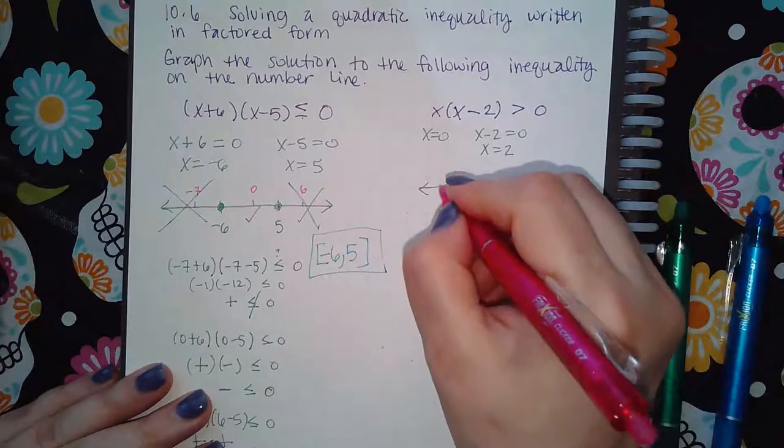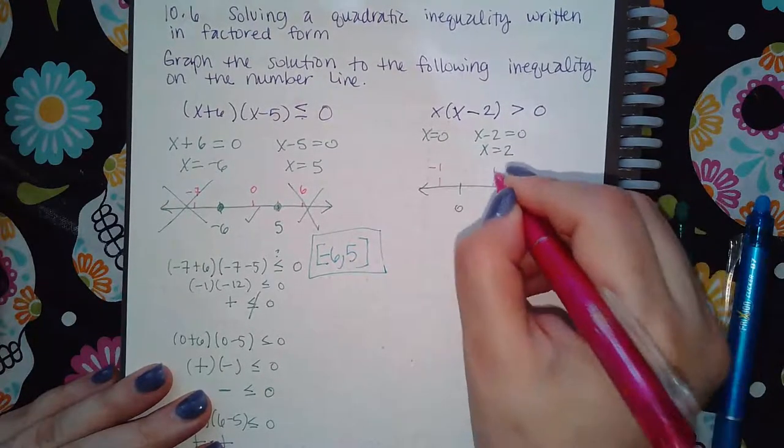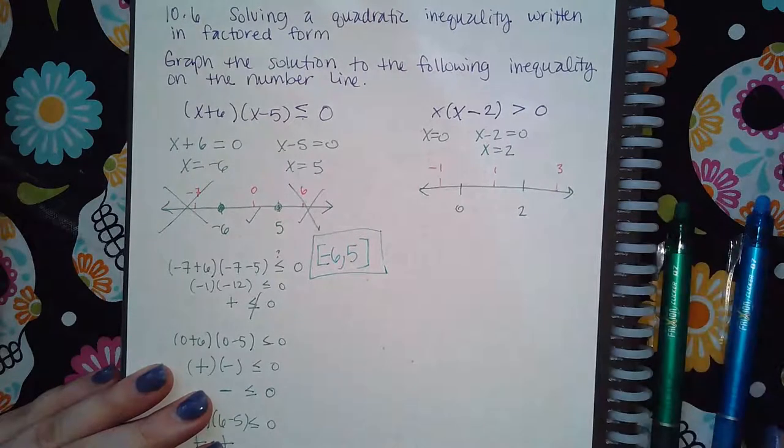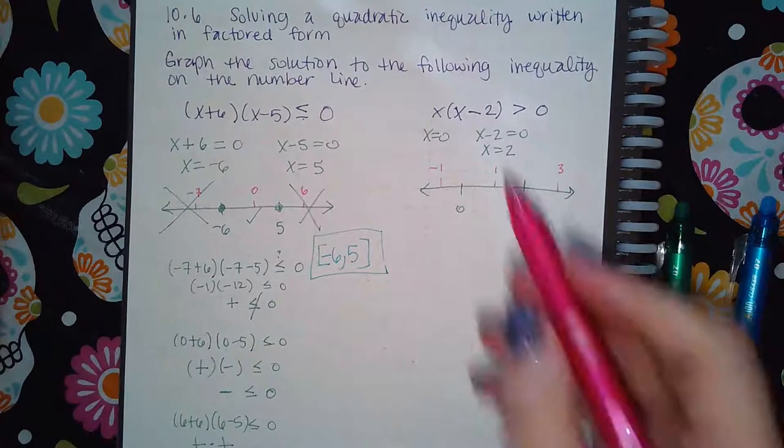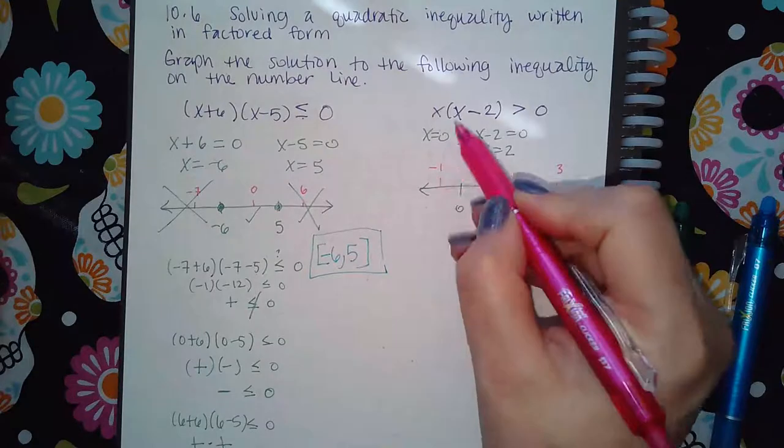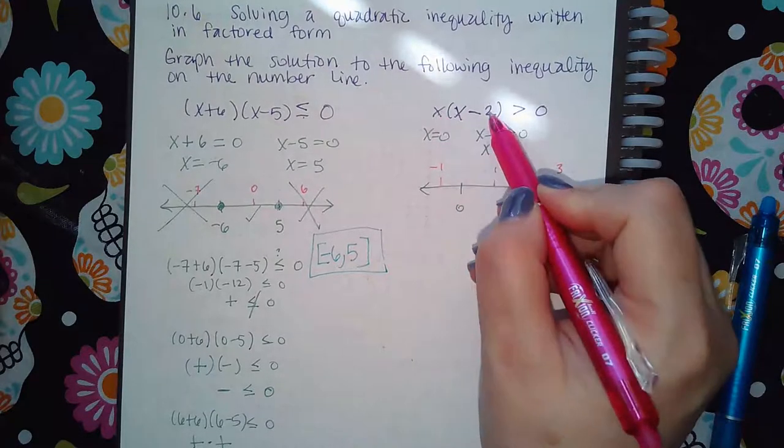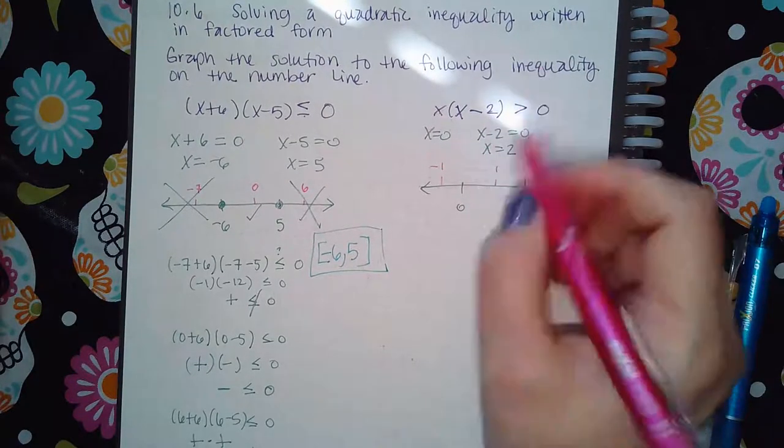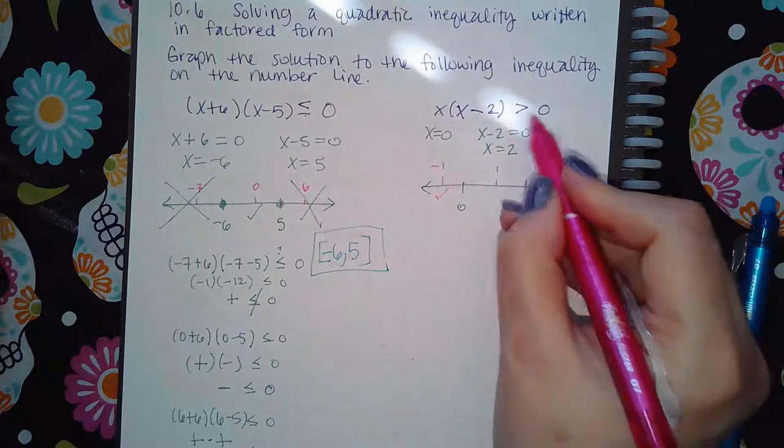Pick test values in between like negative one, positive one, and three, and then see what the values you get. So here I'm going to plug in negative one. I'm going to get a negative times a negative, which is positive. So that is greater than zero.